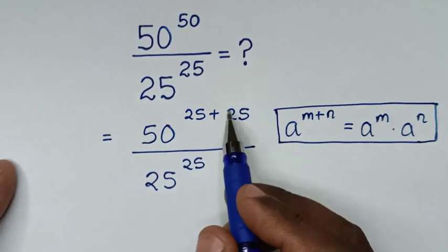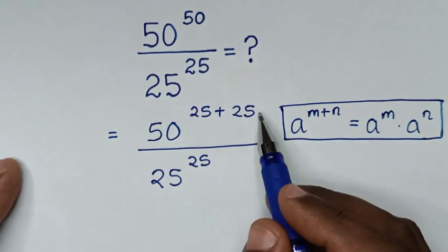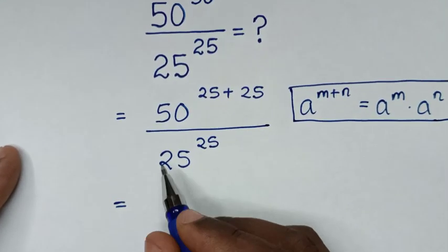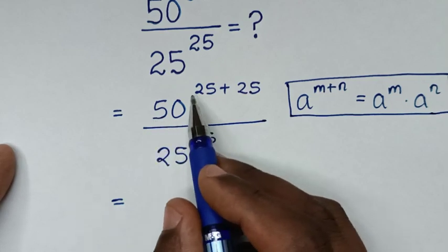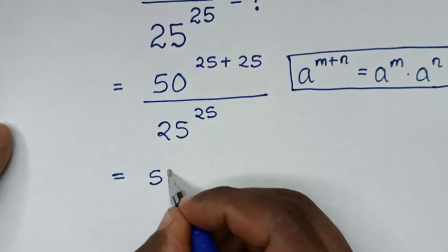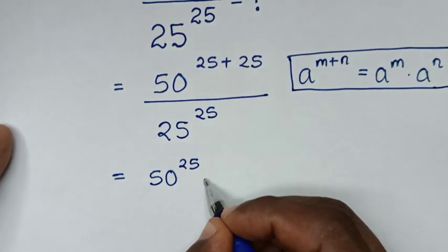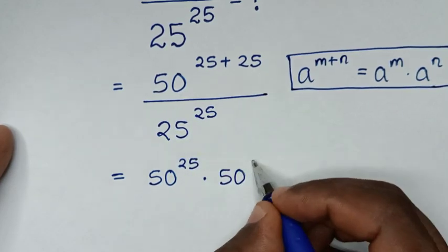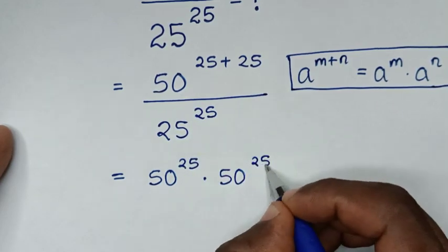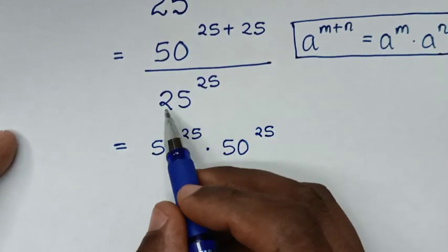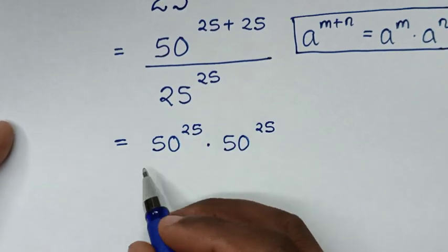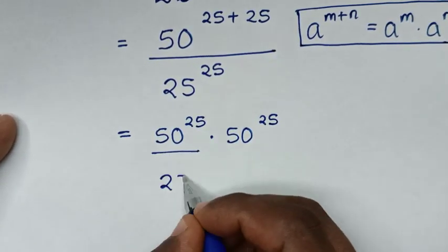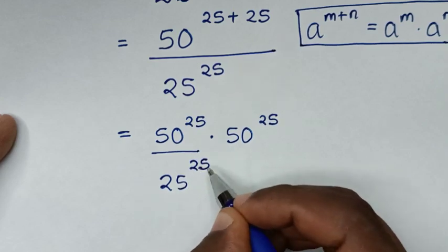So in the numerator we have a multiplication of exponents in this form, so it will be equal to 50 to the power of 25, times 50 to the power of 25, then divided by 25 to the power of 25.